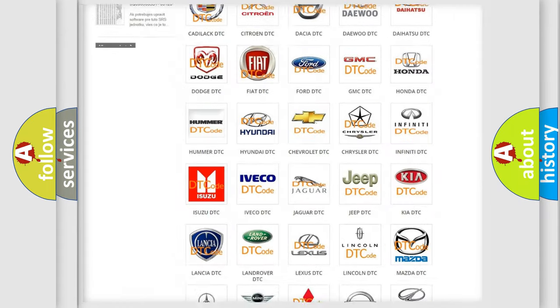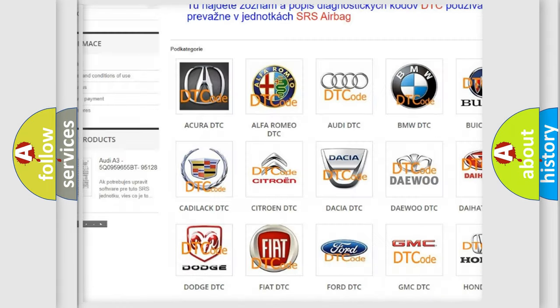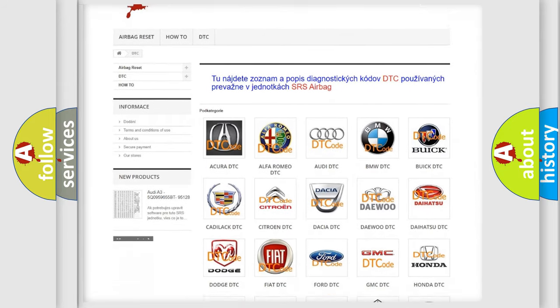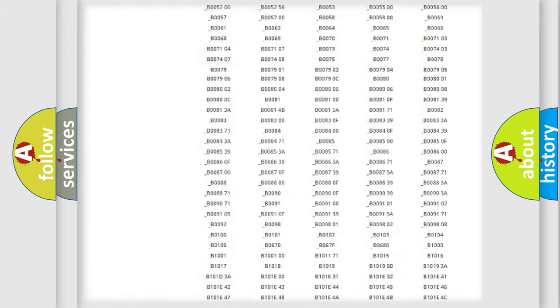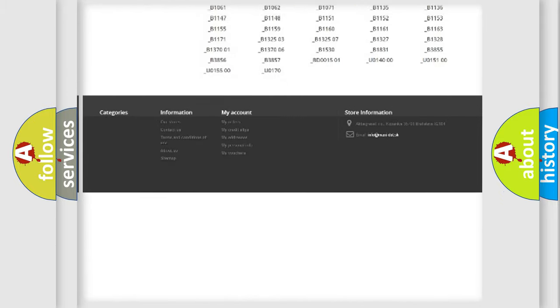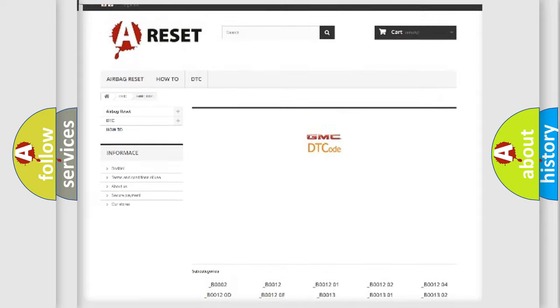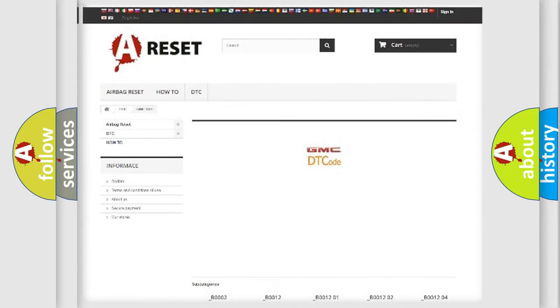Our website airbagreset.sk produces useful videos for you. You do not have to go through the OBD2 protocol anymore to know how to troubleshoot any car breakdown. You will find all the diagnostic codes that can be diagnosed in GMC vehicles, and many other useful things.